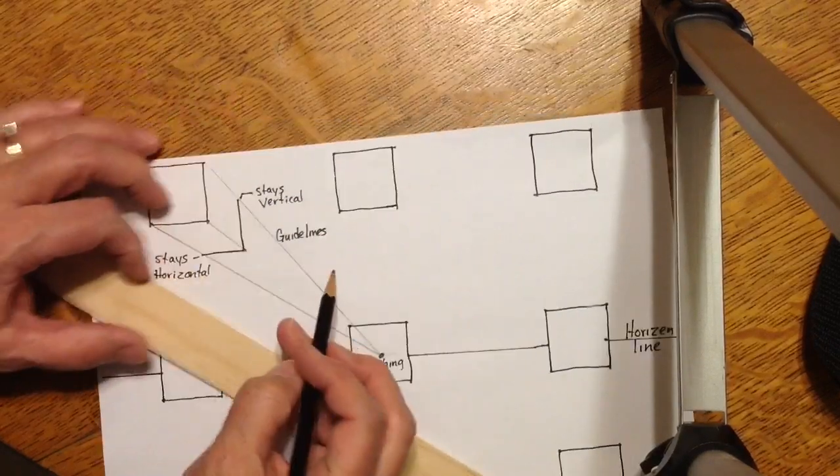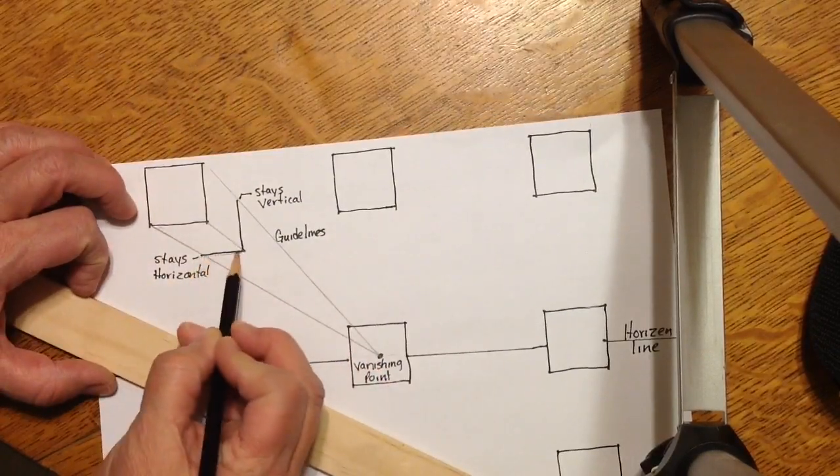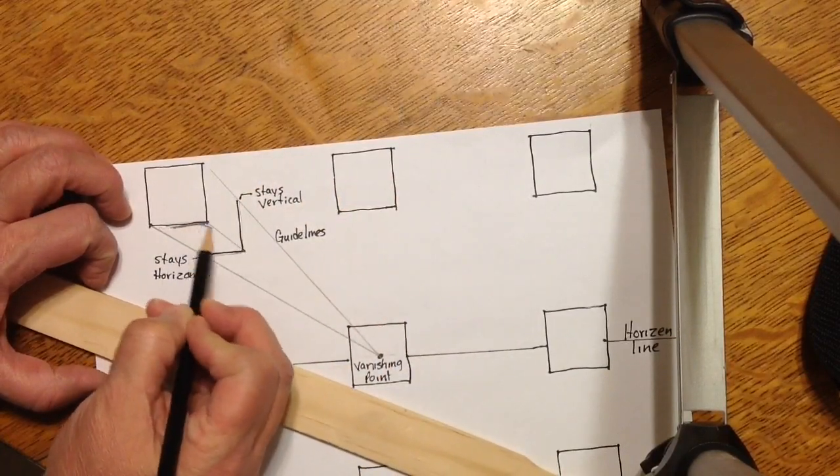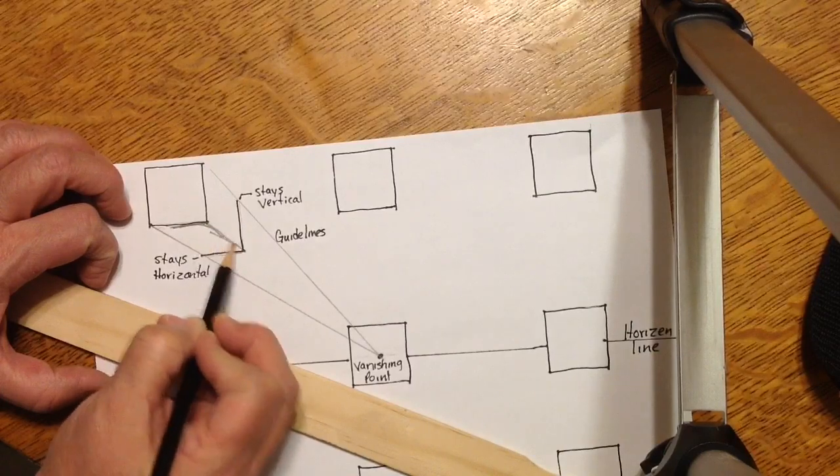After you have all three corners drawn, the end of the box is parallel to the end of the square.